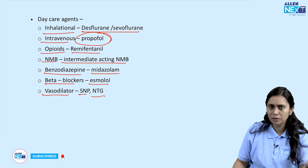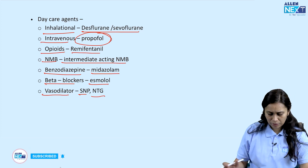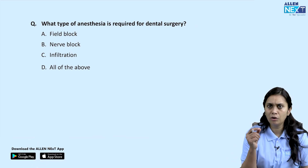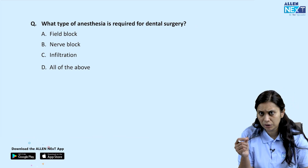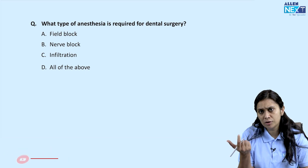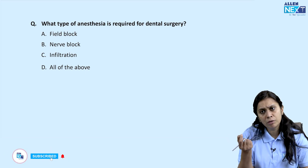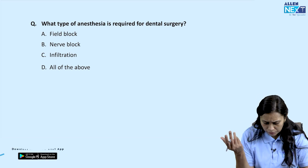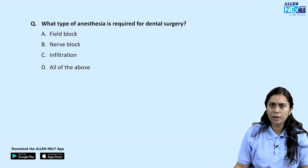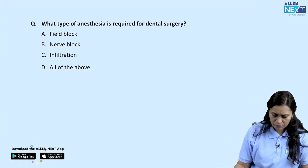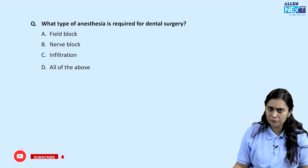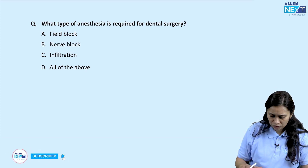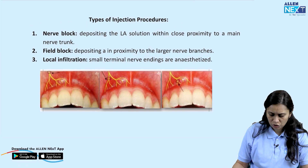The next question: what type of anesthesia is required for dental surgery? For tooth extraction, we mostly go for local infiltration. The options are field block, nerve block, infiltration, or all of the above. To understand the differences, consider an image showing the three techniques.